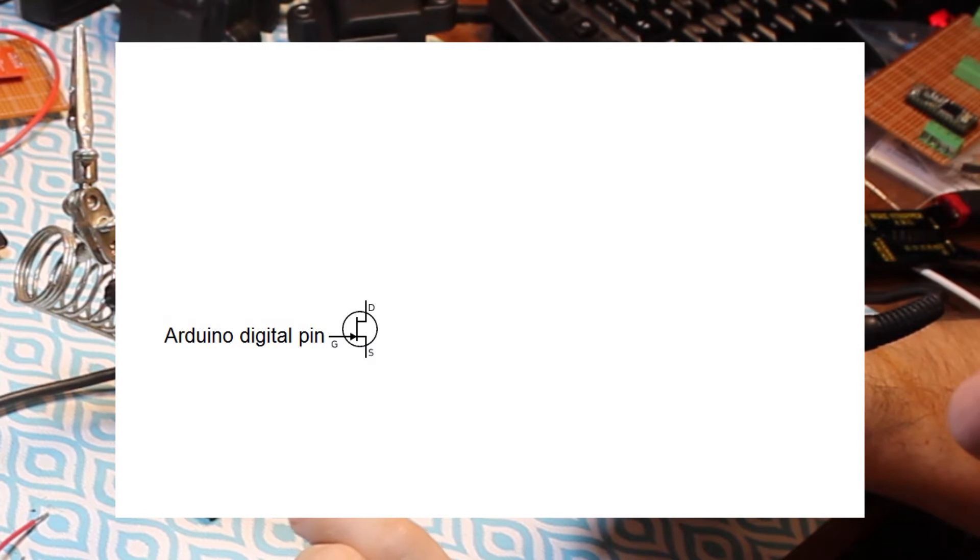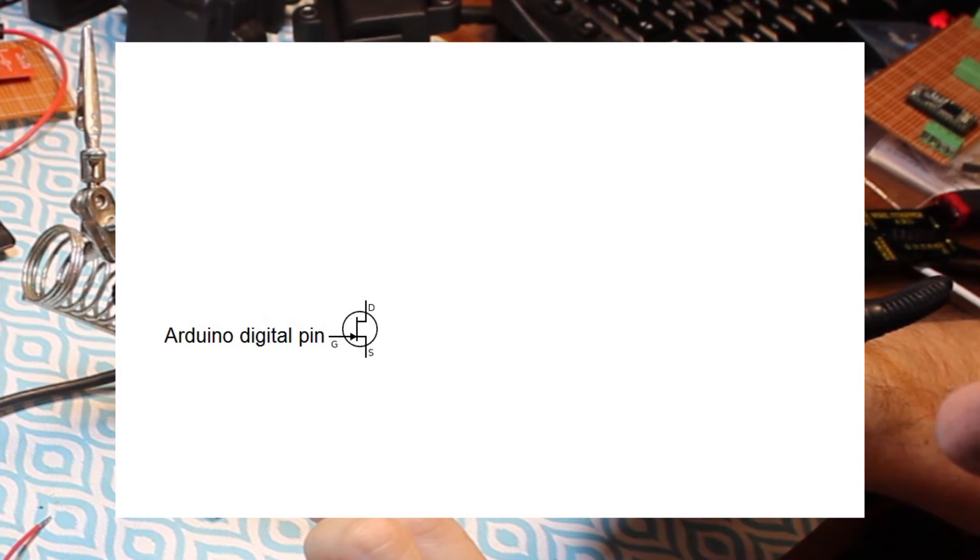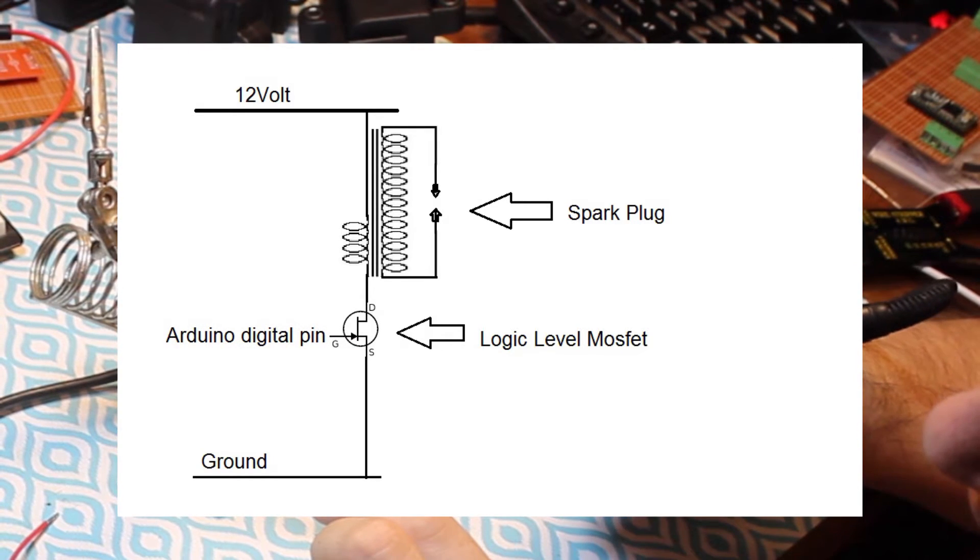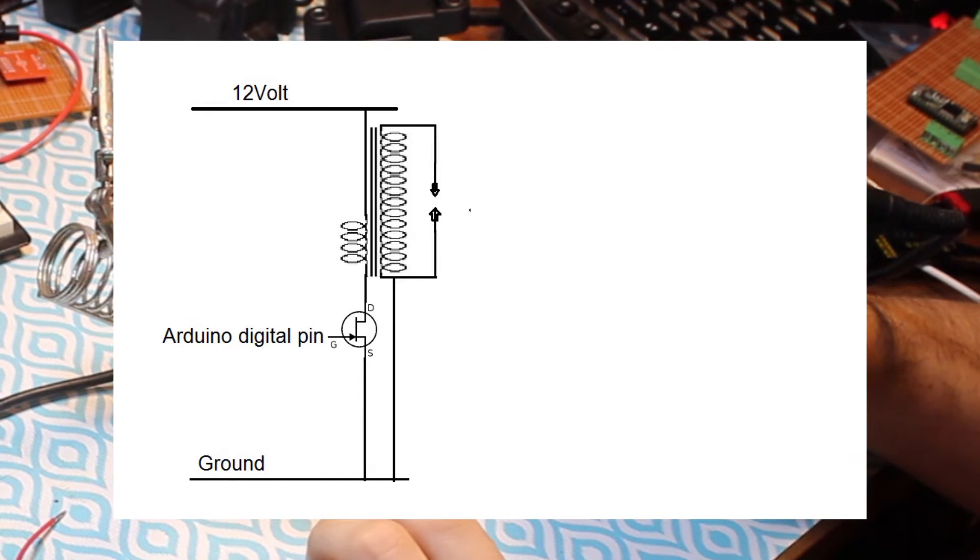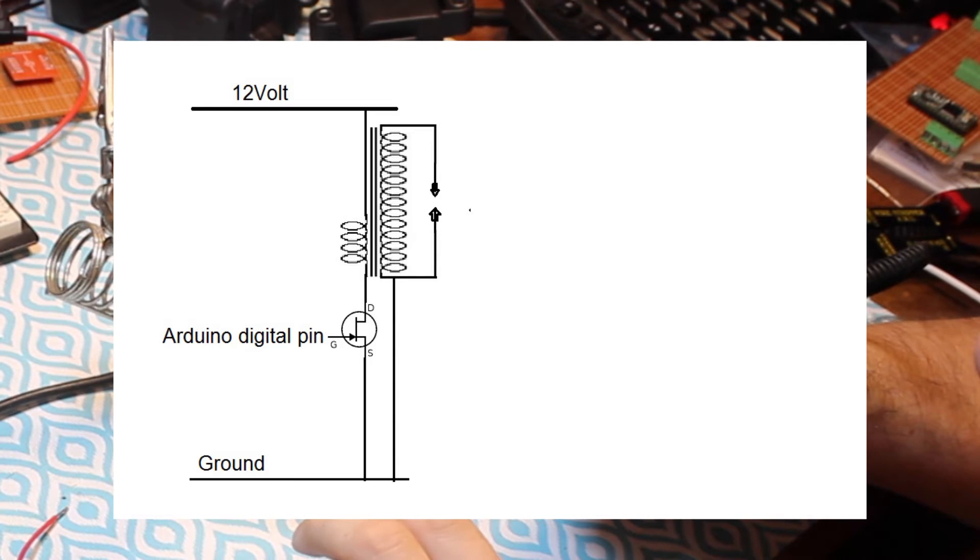I took an Arduino and a logic level MOSFET. This is the building blocks for half the things I've done. Then I connected them to an ignition coil, primary winding, and a 12 volt source. Now, normally the secondary winding would be grounded. And I did ground it, but not directly.